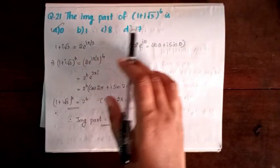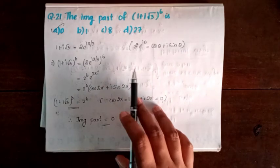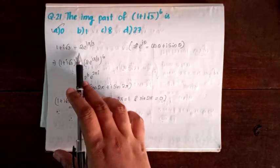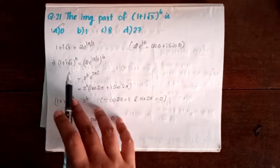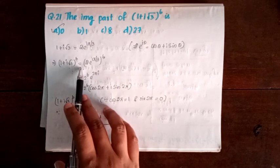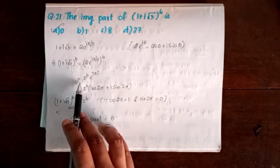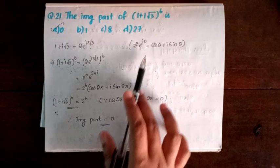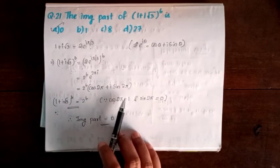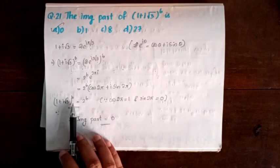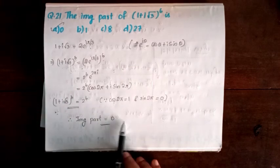Question 21. The imaginary part of (1 plus i√3)^6. First, 1 plus i√3 equals 2e^(iπ/3). So (1 plus i√3)^6 equals 2^6 · e^(2πi) equals 2^6 · (cos2π plus i·sin2π). Since cos2π equal to 1 and sin2π equal to 0, the result is 2^6, a real number. So the imaginary part is 0. Option A is correct.